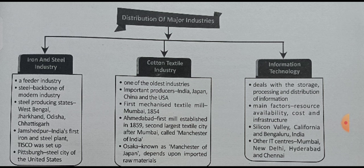Next is information technology. IT deals with the storage, processing, and distribution of information. The main factors here are resources, ability, cost, and infrastructure. Silicon Valley in California and Bangalore in India are the major IT hubs. Bangalore is the Silicon Valley of India, and California is the Silicon Valley of the USA. Other IT centers in India include Mumbai, New Delhi, Hyderabad, and Chennai.